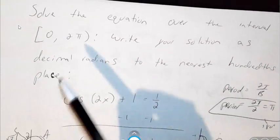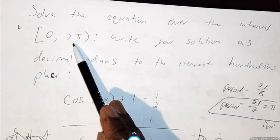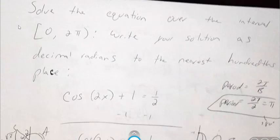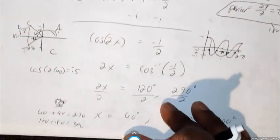Now, if you remember in the directions, it says write your answer on the interval 0 to 2 pi, not 0 to 360. And write your answer as decimal radians to the nearest hundredth place. So we first need to change our answer back to radians.